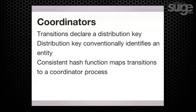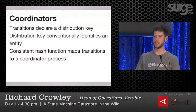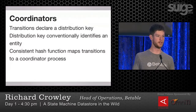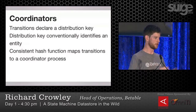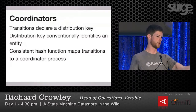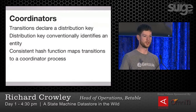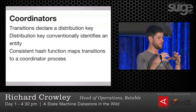A transition has a coordinator, and it's up to that transition how the coordinator is determined. Every transition declares its distribution key, and that goes into the consistent hash function and out pops the address of some process that is the coordinator for that thing. Conventionally, that distribution key is the identifier for an entity — that's how we arrive at entities being coordinated by different processes.